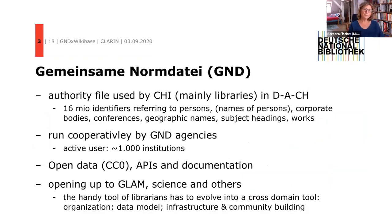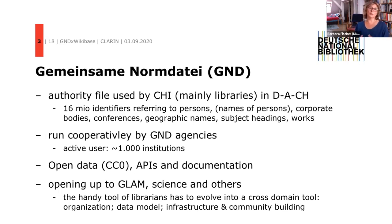The Gemeinsame Normdatei — the integrated authority file — is mainly used by libraries, but increasingly also by cultural heritage institutions in Germany, Austria and Switzerland. Right now we have 60 million identifiers referring to persons, which means both persons and their names, corporate bodies, conferences, geographical names, subject headings and works. We are reducing that number heavily to about half, because we have decided to take out all those records that simply contain the names of persons with no further information, so we are rectifying our integrated authority file to make it more precise and more interoperable.